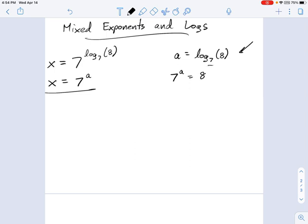That's this base raised to an exponent equals the argument. Well, 7 to the a equals 8. Look over here, we have 7 to the a equals x. So these are equal to each other, meaning the answer to this is 8.